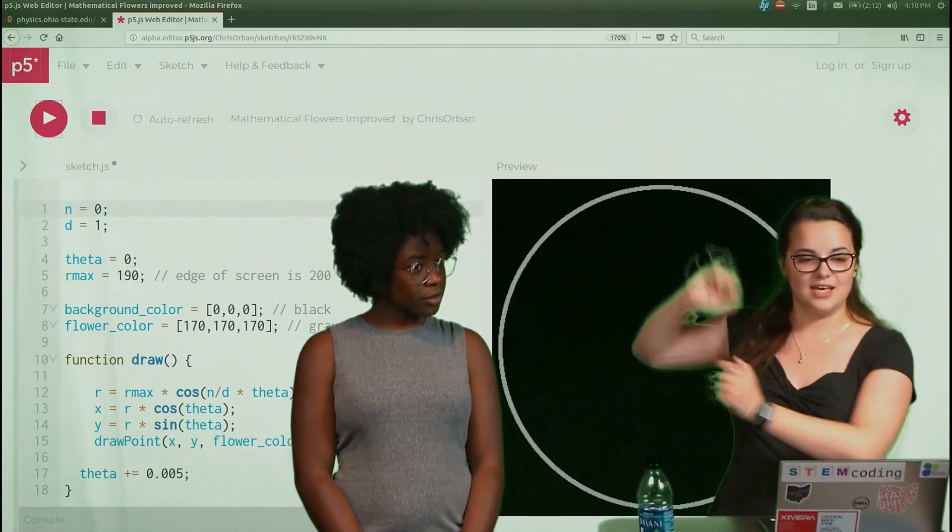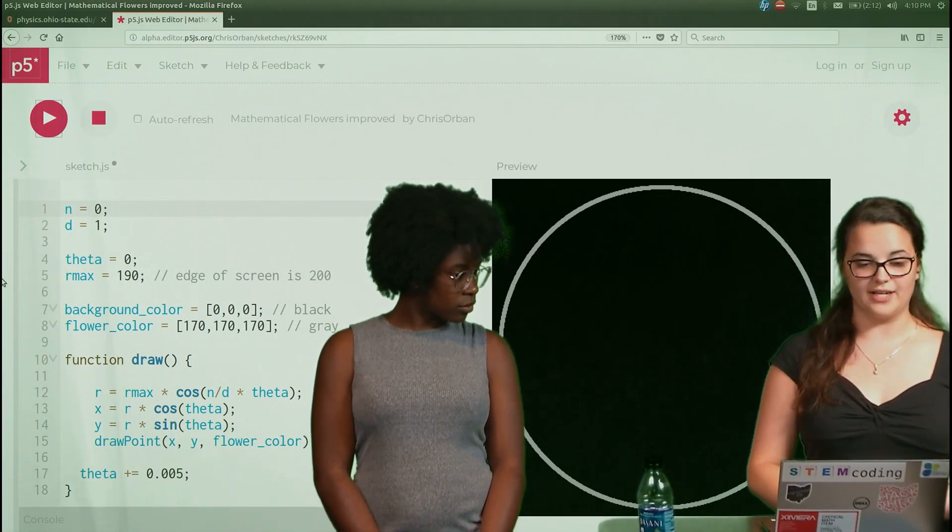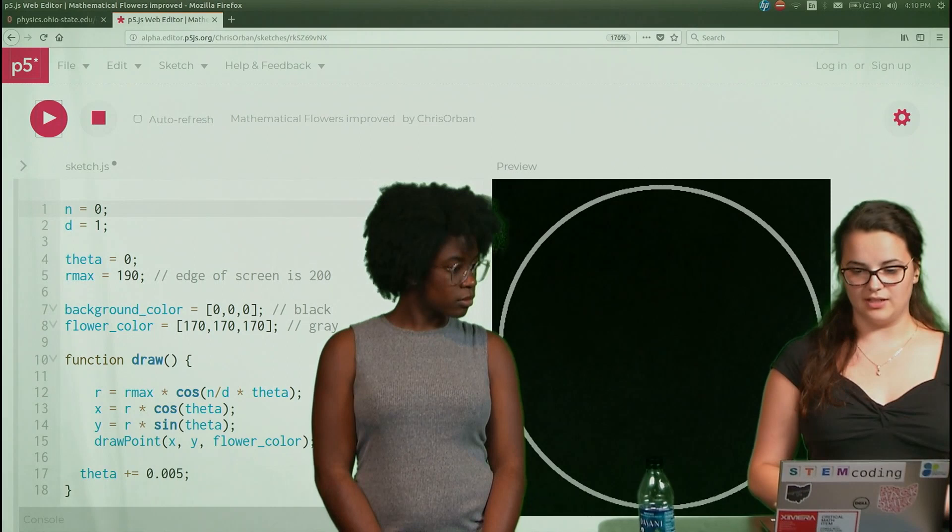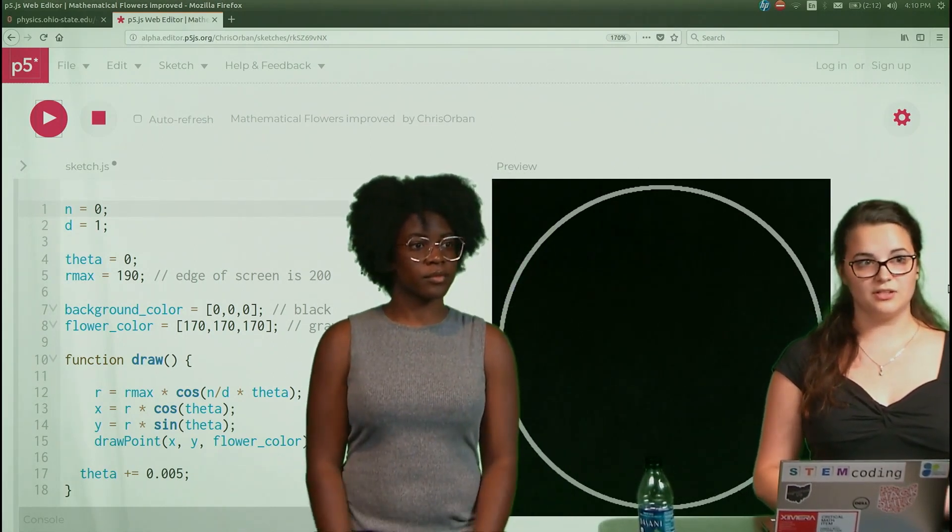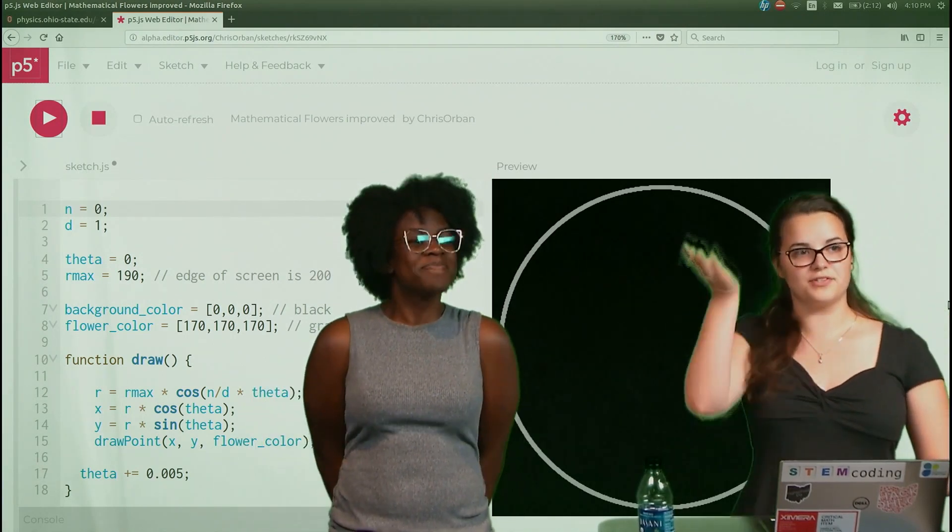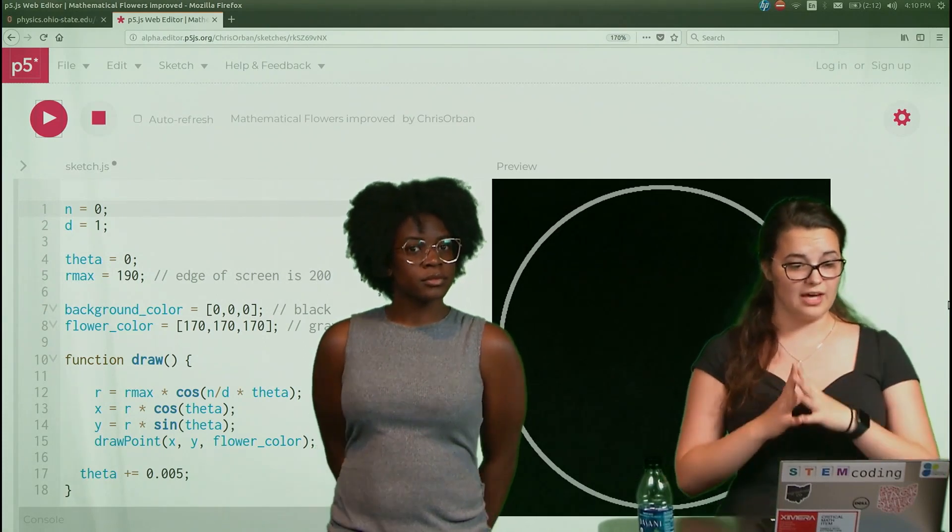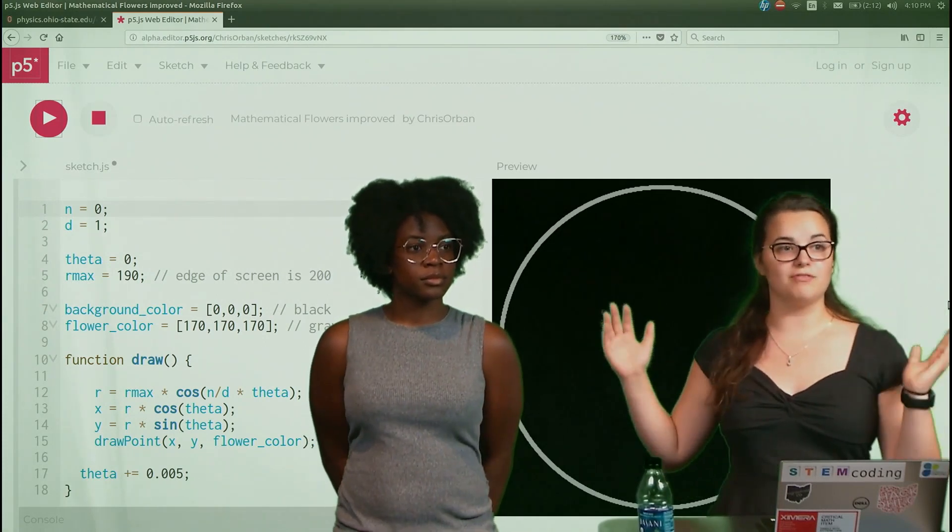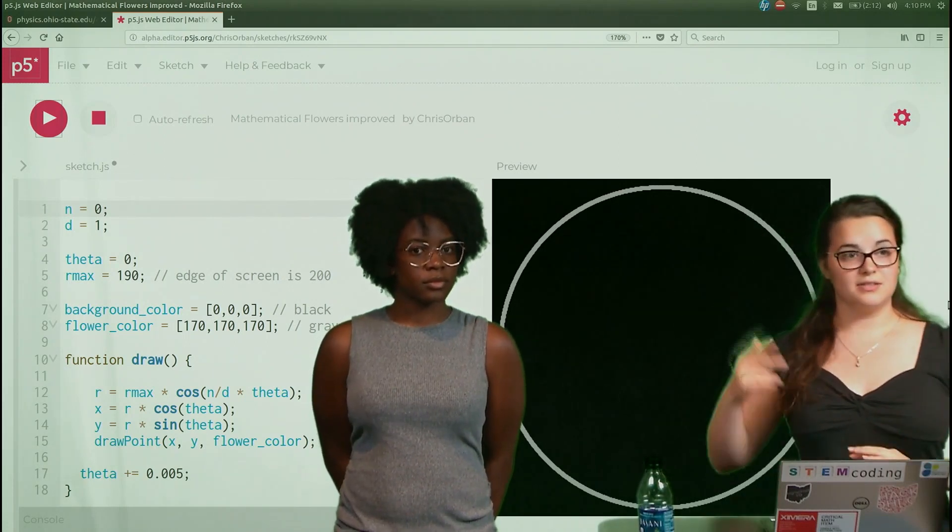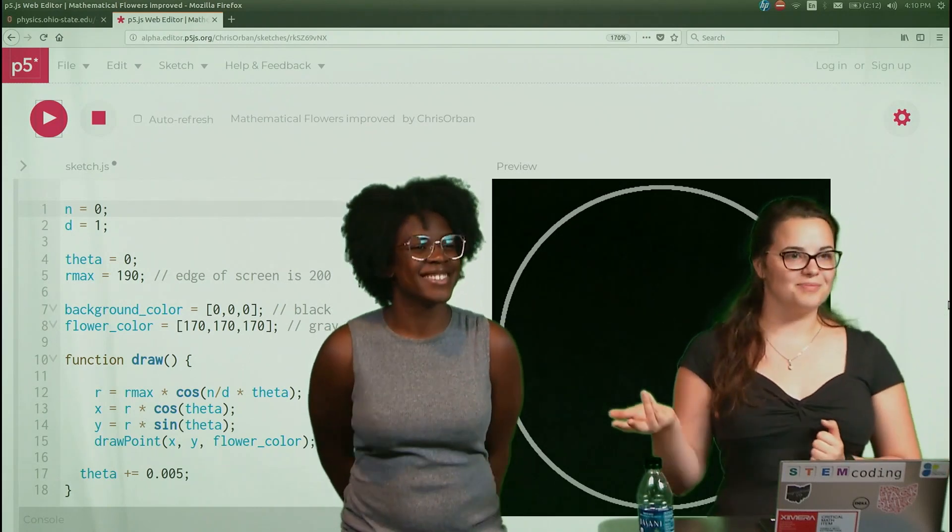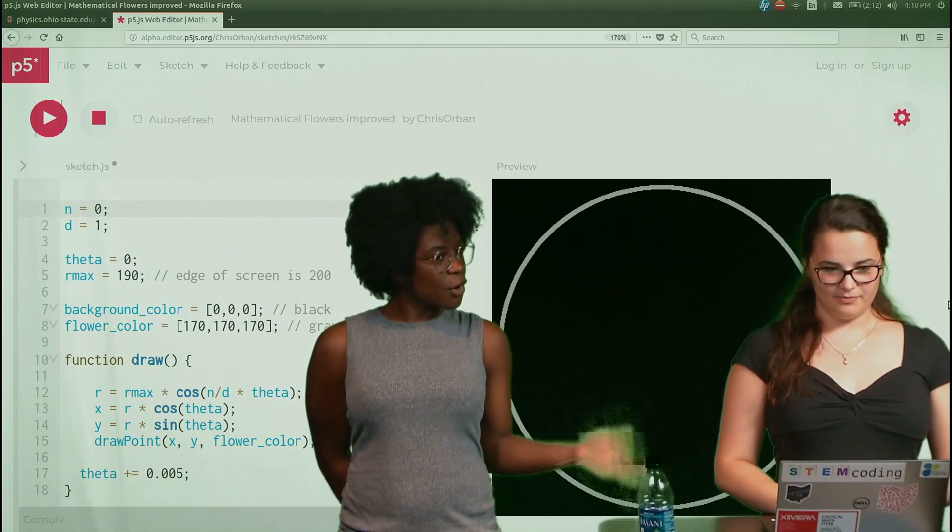Okay. And why is this circle the specific size? If we look at our code, we see that our R max is defined as 190. The reason behind this is our screen runs from negative 200 to 200 in x direction and negative 200 to 200 in y direction. So by setting it to 190, we make sure that whatever we graph doesn't run outside of our window, because we know the cosine is always going to be between negative 1 and 1. Yes. So if we multiply times 190, it's going to be between negative 190 and 190. So we'll never go off the screen.